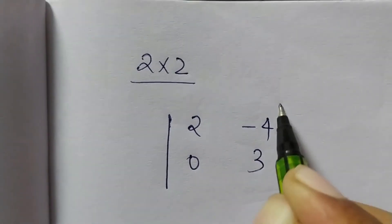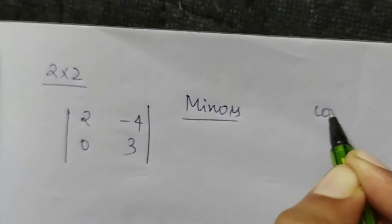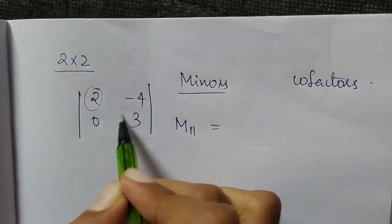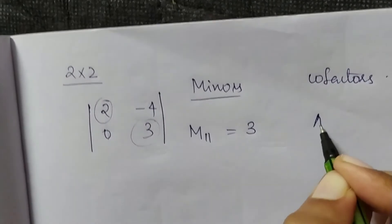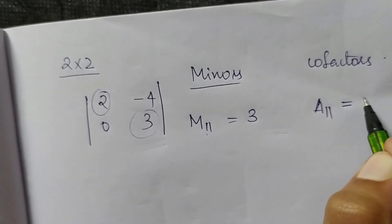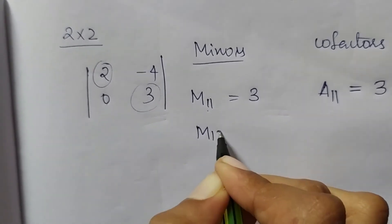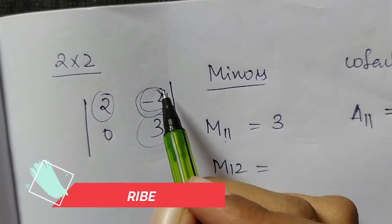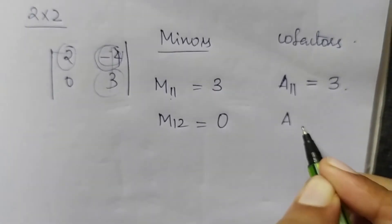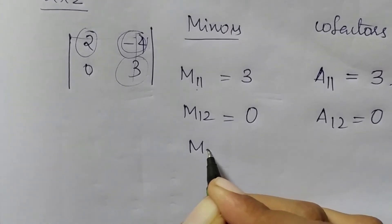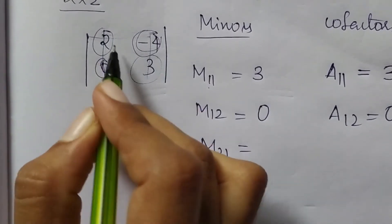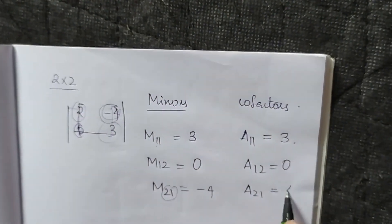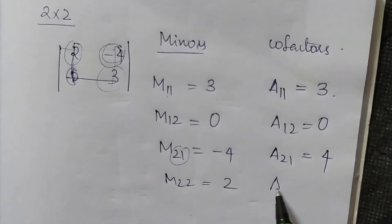Let's find minors and cofactors for a simple 2 by 2 matrix: 2, 4, 0, 3. The minor M11 is 3. The cofactor A11 equals (minus 1) to the power (1+1) times 3, which is plus 3. The minor M12 is 0, so A12 is 0. The minor M21 is 4. Cofactor A21 has sign change: (minus 1) to the power (2+1) times 4 is minus 4. Similarly, M22 is 2, and cofactor A22 is 2.